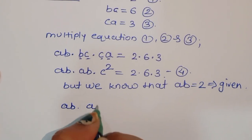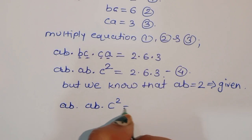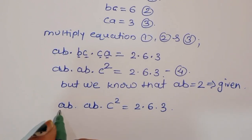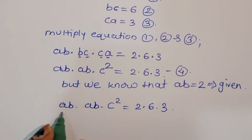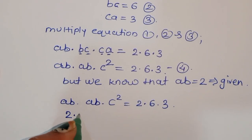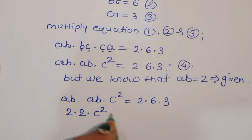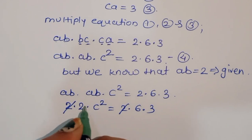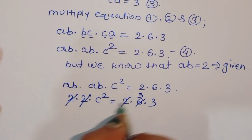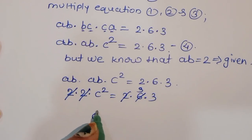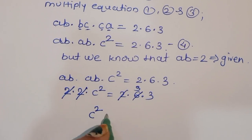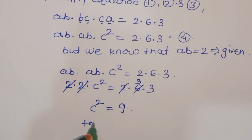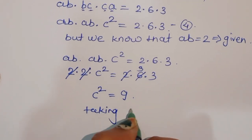Equation 4 becomes: ab times ab times c squared is equal to 2 times 6 times 3. Substituting ab equals 2: 2 times 2 times c squared is equal to 2 times 6 times 3. These twos cancel, and 3 times 3 gives us 9, so we get c squared is equal to 9.